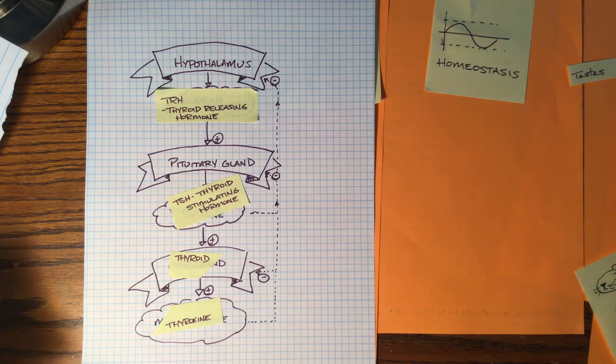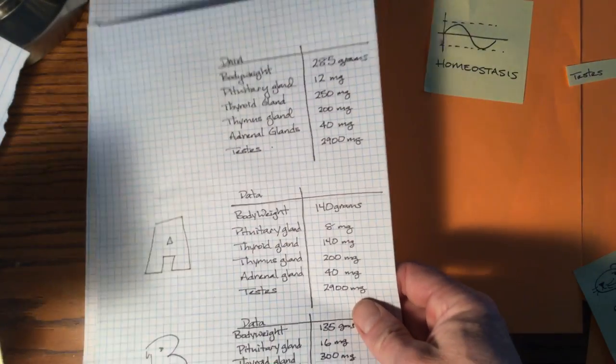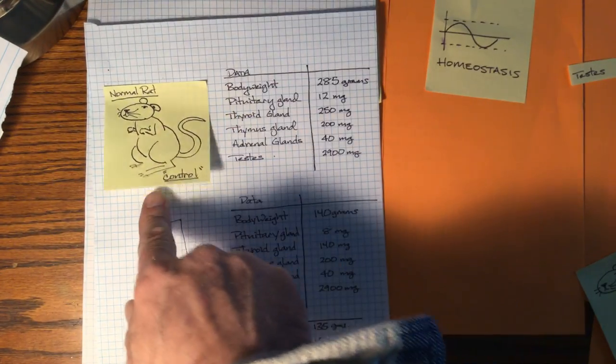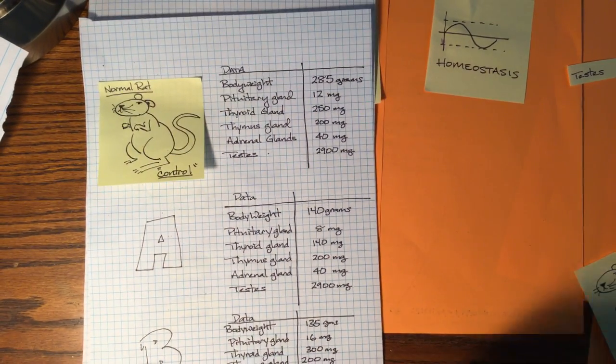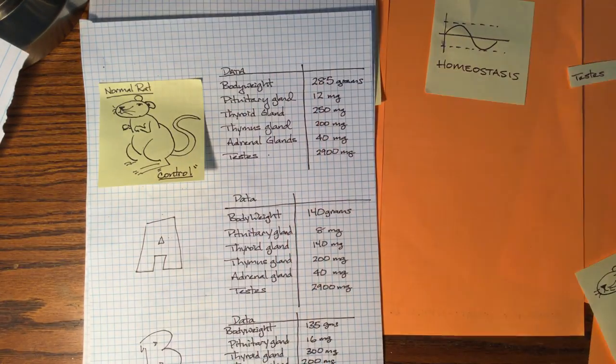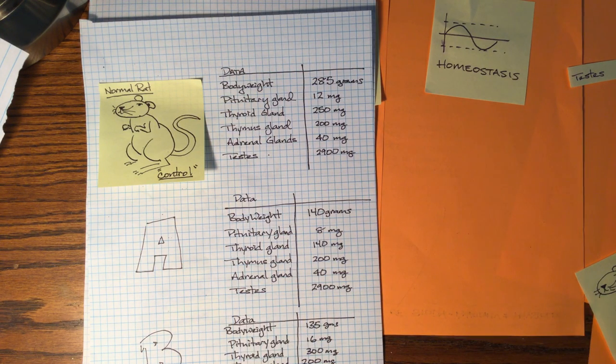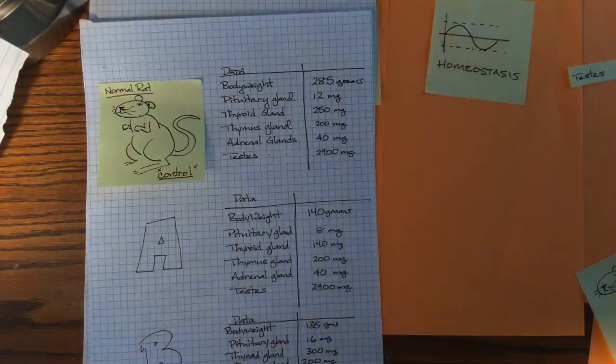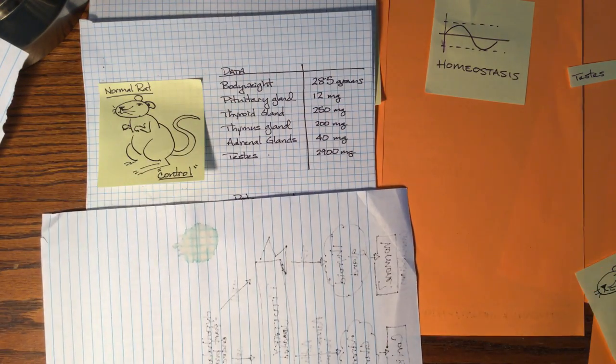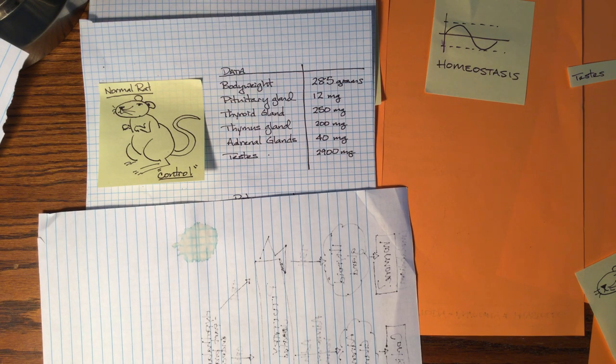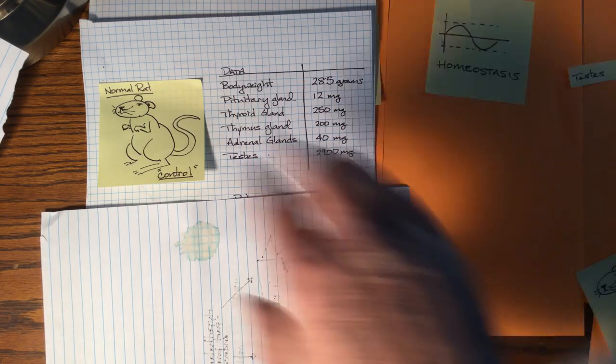You're going to do this by comparing certain rats to what a normal rat looks like. There's a normal rat, this is our control rat. Normal rats typically weigh 285 grams. Their pituitary glands are about 12 milligrams. Their thyroid gland is 250 milligrams. Their thymus gland usually is about 200 milligrams. The adrenal glands weigh 40, and the testes weigh 2,900 milligrams in males. This is a normal rat.